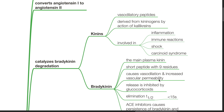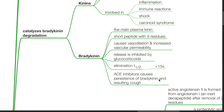Kinins are vasodilatory peptides derived from kininogens by action of calicreins, involved in inflammation, immune reactions, shock and carcinoid syndrome. Bradykinin is the main plasma kinin. It is a short peptide with 9 residues. It causes vasodilation and increased vascular permeability. Its release is inhibited by glucocorticoids. Elimination half-life is less than 15 seconds. ACE inhibitors cause persistence of bradykinin and resulting cough.